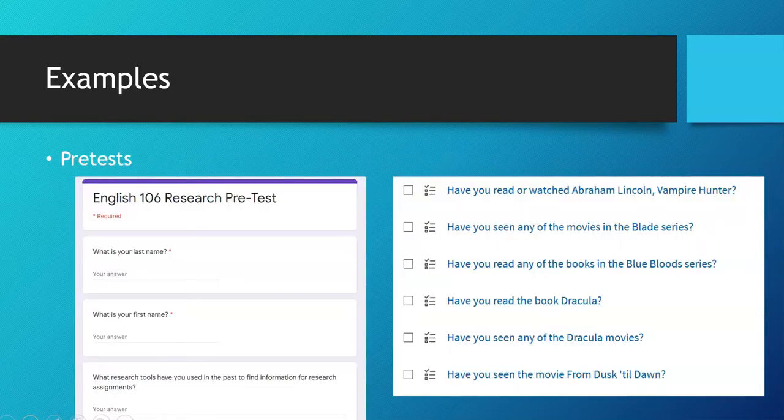Some other examples include pre-tests. I conduct a pre-test with several sections a semester of English 106 to ask them what kinds of research have they done, what do they already know about what I plan to talk about. And then when I meet with those students, I show them the results of that and only teach the things that they didn't do well on.